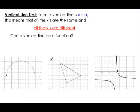Another way we can tell if something is a function: if we look at a table and every x has only one y, we have a function. But what if we just have a graph? We can do what is called the vertical line test. For a vertical line, the equation is x equals a, which means all the x's are the same and all the y's are different.